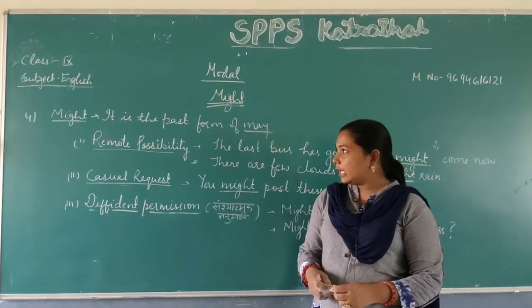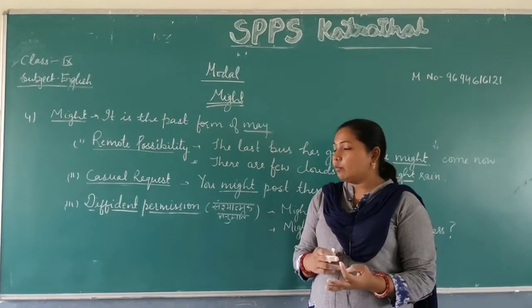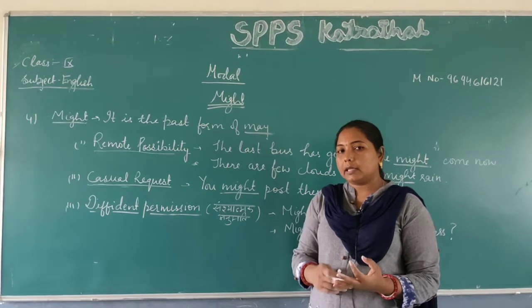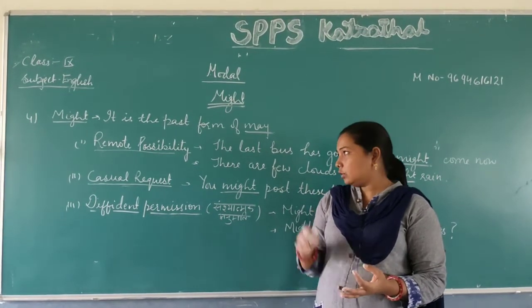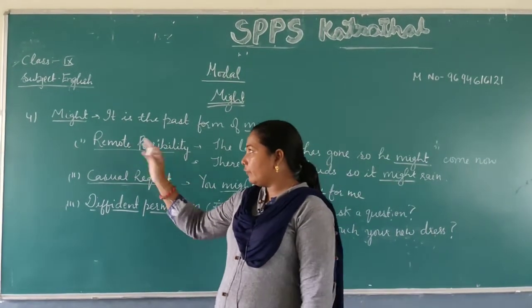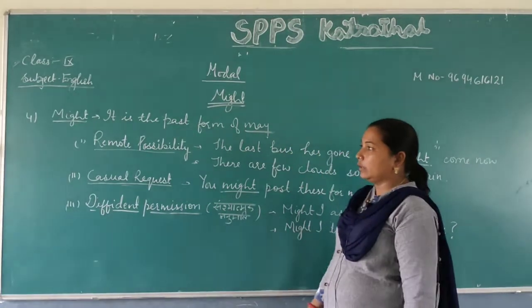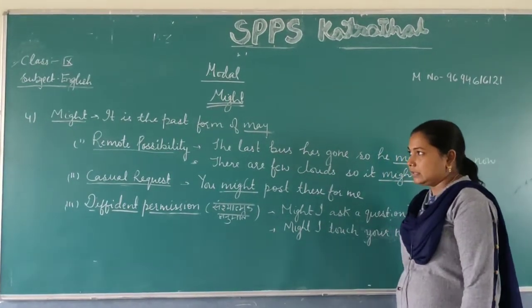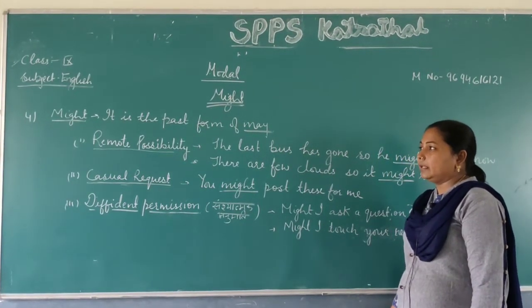We have already studied number one modal: can, two: could, and three: may. Today our fourth modal is might.